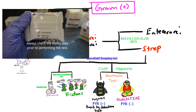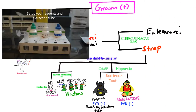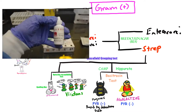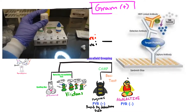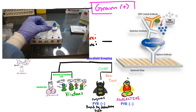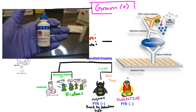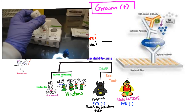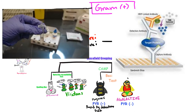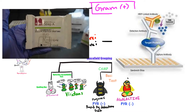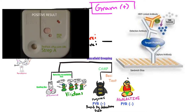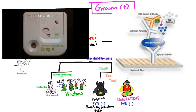It's a small kit which detects GAS in a few minutes. They use antibodies for detection of group A carbohydrate antigen. The indicator systems used are latex agglutination or enzyme immunoassay. It's 70-90% sensitive and has a specificity of 90-100%.